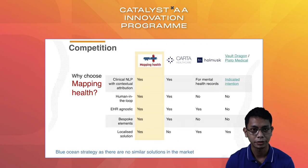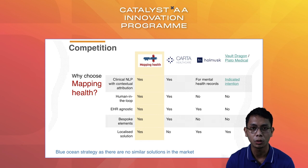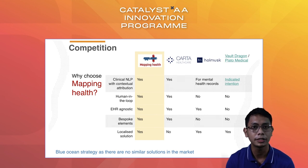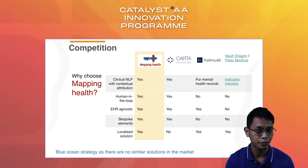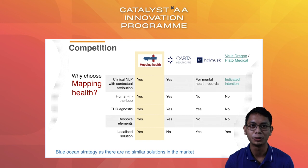So why choose Mapping Health? We have surveyed the competitor landscape and find that our human-in-the-loop module as well as bespoke elements distinguish us from our local and regional competitors. In fact, we have found a company called CARTA Healthcare, based in San Francisco, which is trying to do something very similar to us, except that we have the localized knowledge for this market. Notably, CARTA is the Latin word for map, so apparently we were not the only ones thinking of mapping health.